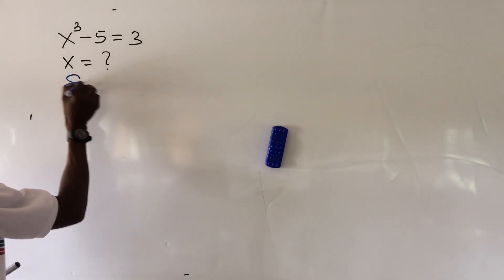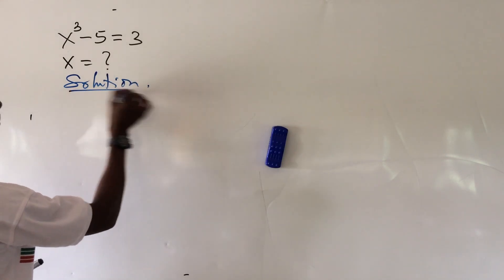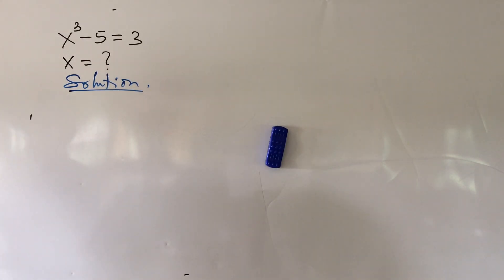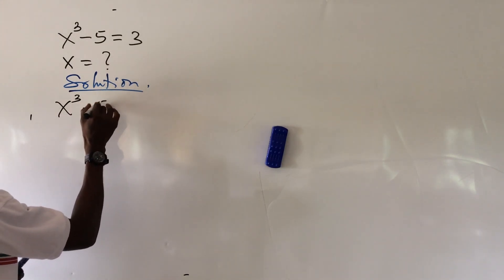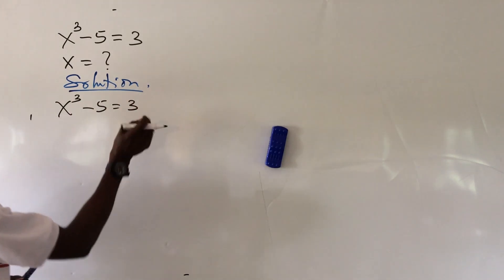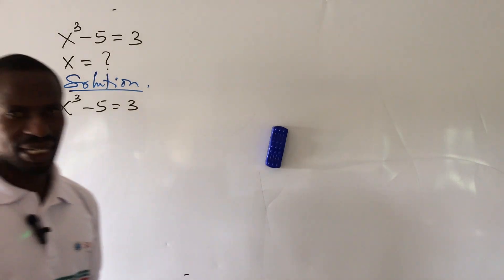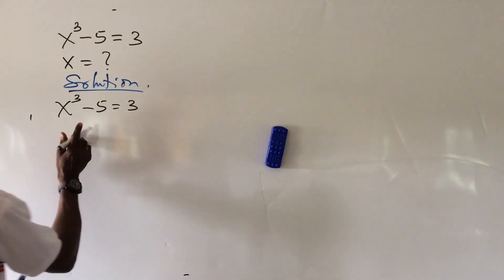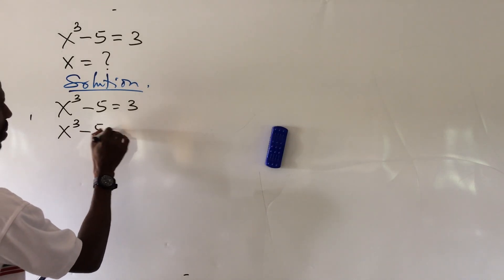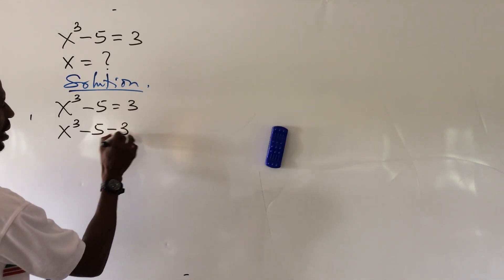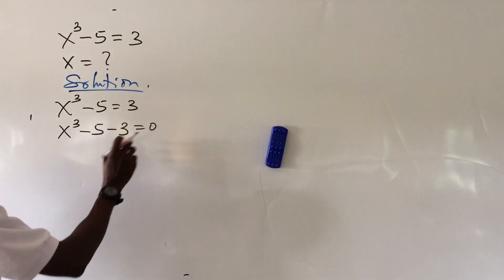To have a solution, we'll write down our equation which is x to the power of 3 minus 5 equal to 3. Carry everything to the left hand side. If you do that, this will now become x to the power of 3 minus 5 minus 3 or equal to 0.